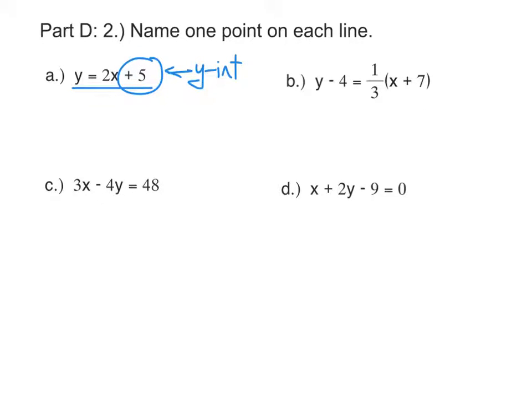The y-intercept is a point, and I want you to label it as a point for this problem. Since it's on the y-axis, it has an x-coordinate of 0, and then the y-coordinate would be 5.